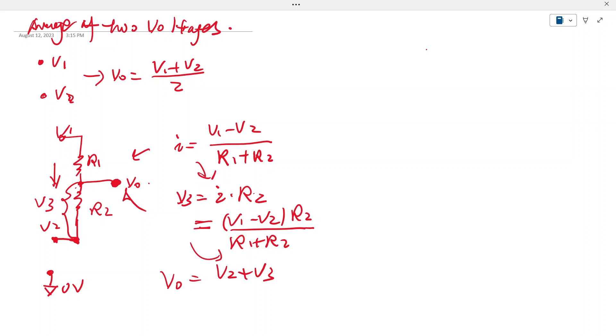Let's plug V3 into this equation. So Vout equals V2 plus V3, which is V1 minus V2 times R2 divided by R1 plus R2. Let's get R1 plus R2 to the top.